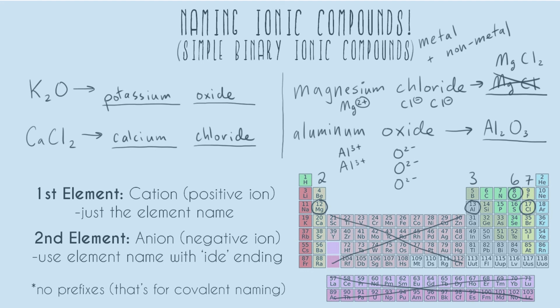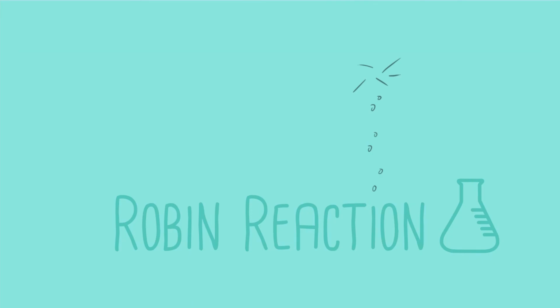So this is how you name simple binary ionic compounds. I have some other videos on other types of naming if you need help with the transition metals and roman numerals. So feel free to check those out. And happy studying.